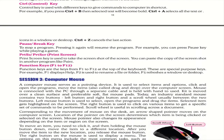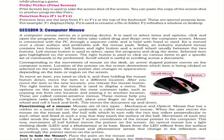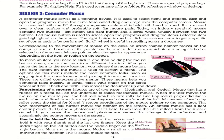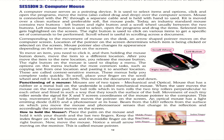A computer mouse is a pointing input device. It is used to select items and options, click to open programs, move items, and drag and drop. A mouse has two buttons — left and right — and a scroll wheel to move from one page to another.